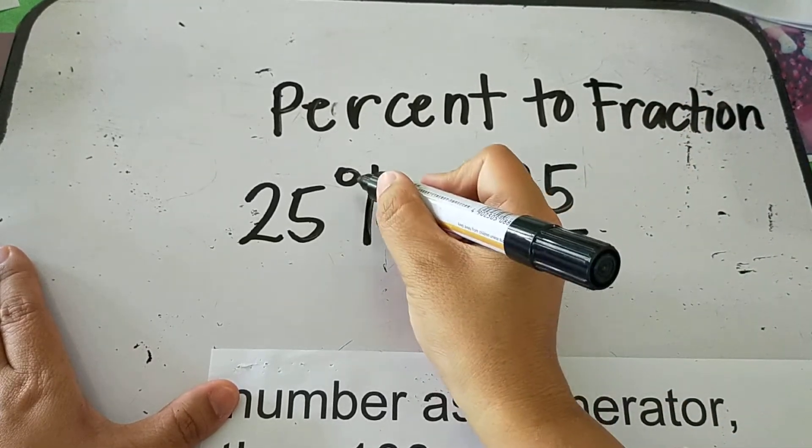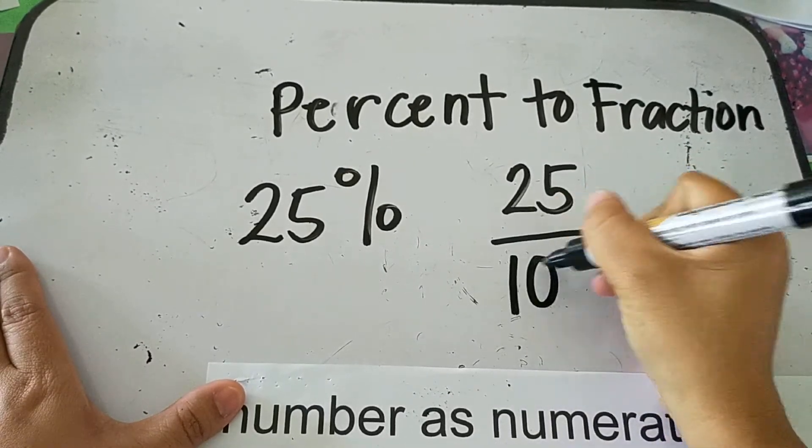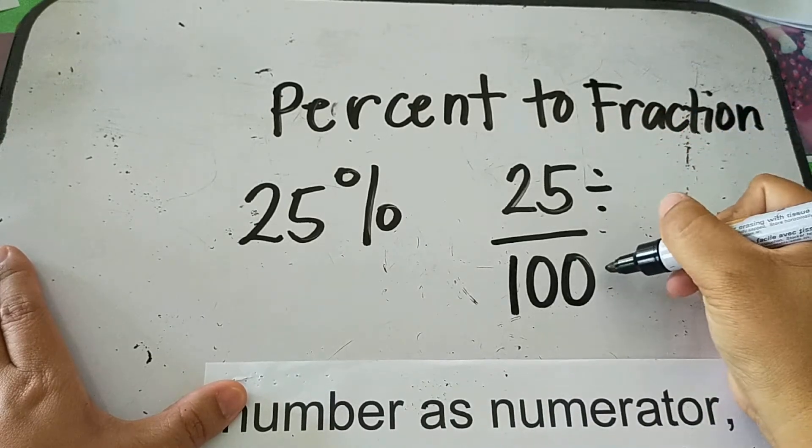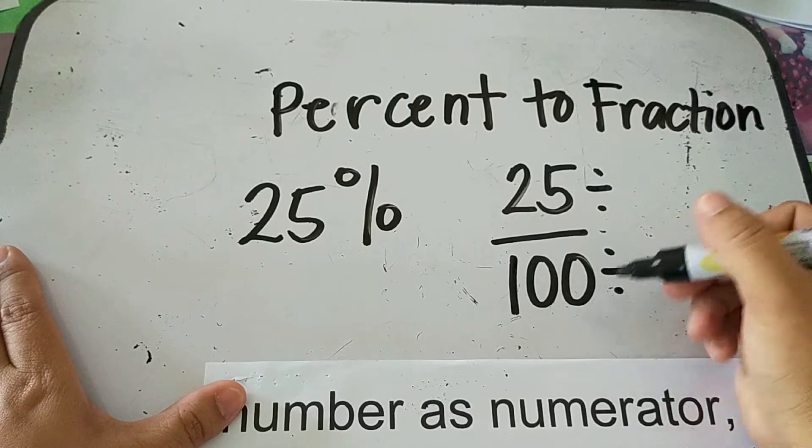And then, this percent sign, it means per 100, right? So 25 over 100. Then we reduce it to lowest term by dividing both the numerator and the denominator by its GCF.